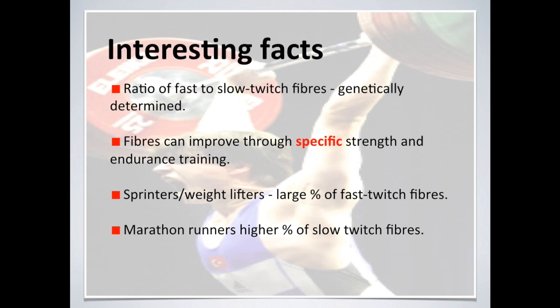Sprinters and weightlifters have a large percentage of fast twitch fibres — those fibres that are really good for explosive, powerful activities. Marathon runners have a high percentage of slow twitch fibres, which are really good for endurance and long-distance activities.